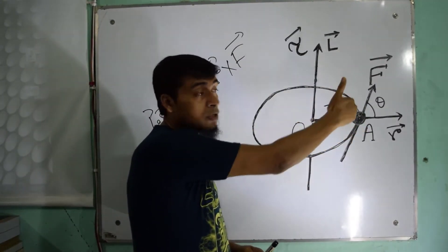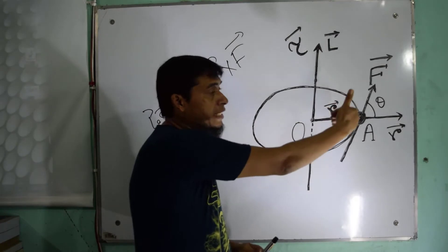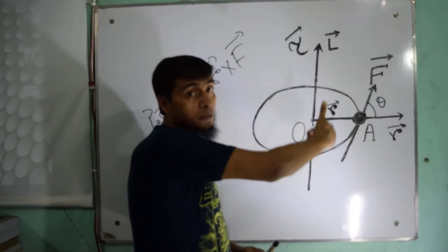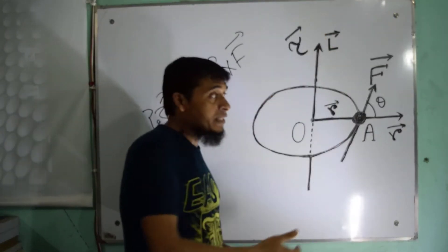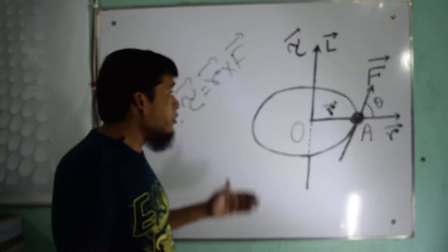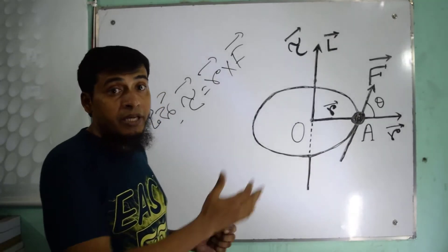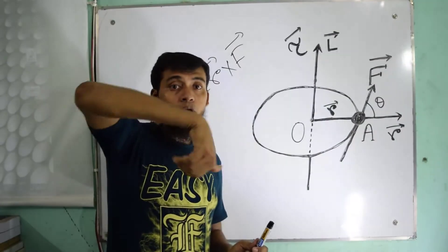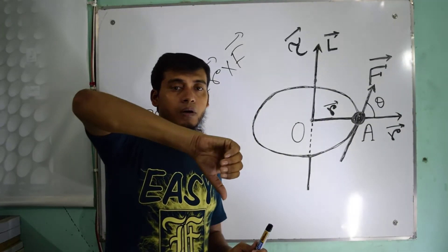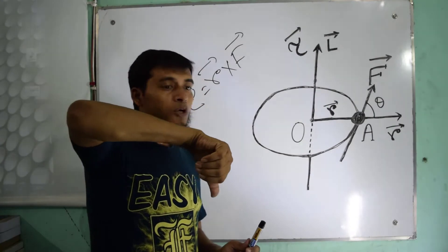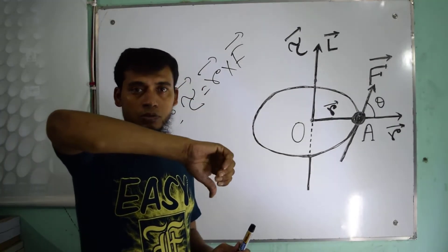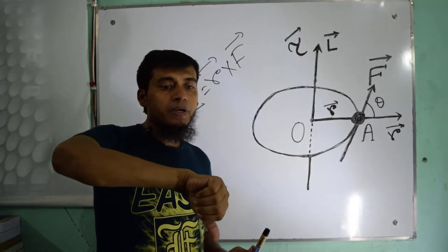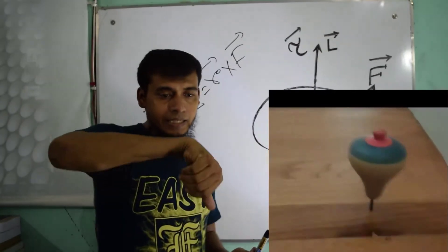Torque equals r cross f. Then you will see the torque, and the torque vector appears at the top. You will see the torque direction as well.